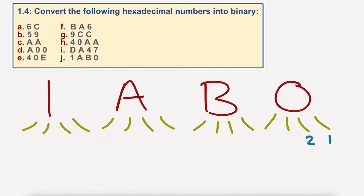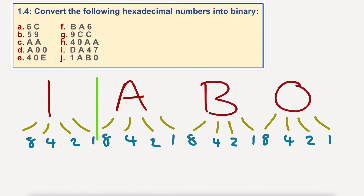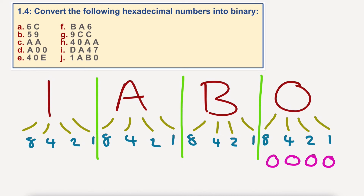Always good practice to number them up — 1, 2, 4, 8 — until you're absolutely au fait with this. And if it helps, I would recommend splitting them down so you can quite easily see each of the nibbles. So 0 is obviously dead easy — none, none, none, none in there. 0 is 0, the same in binary as it is in decimal.